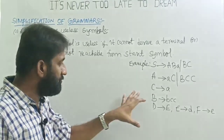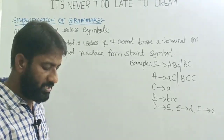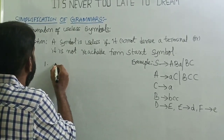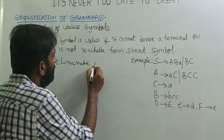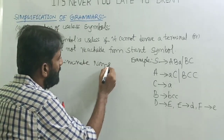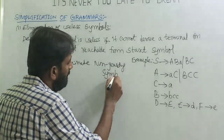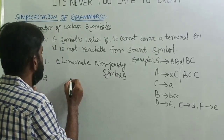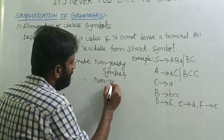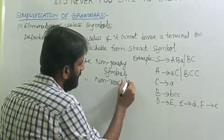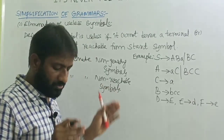Let's take a first example. To solve this problem, let me explain how we can eliminate useless variables. The first way is eliminating non-generating symbols, and the second one is eliminating non-reachable symbols. These are the two steps.